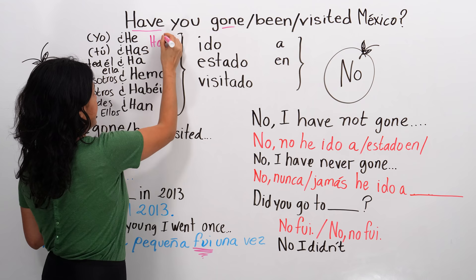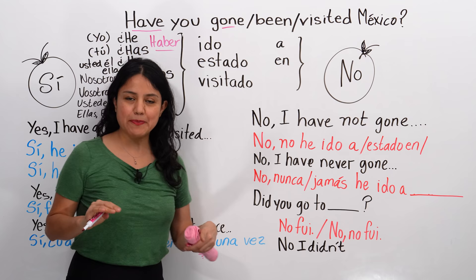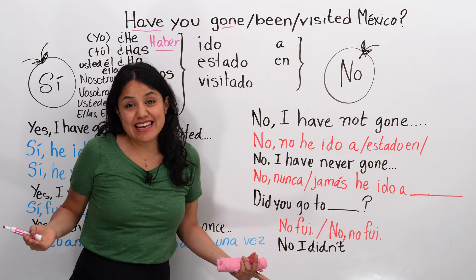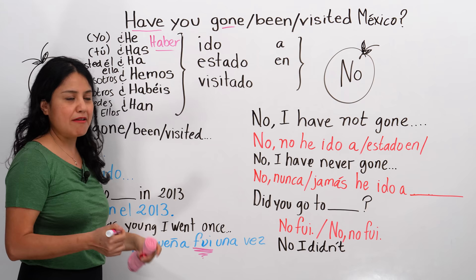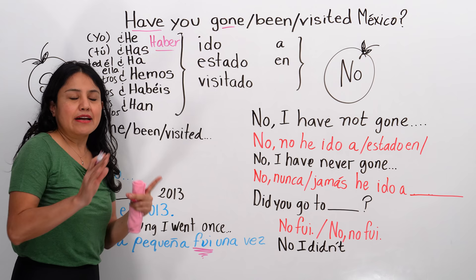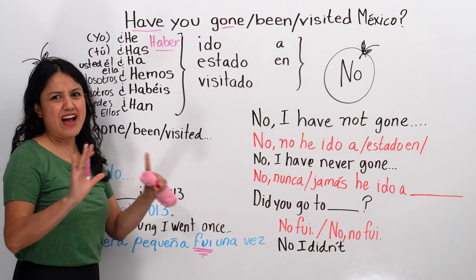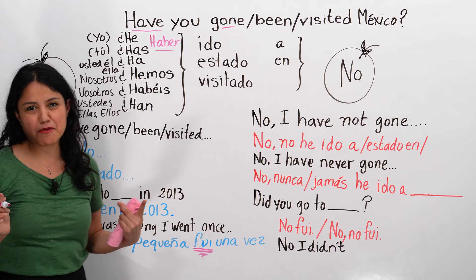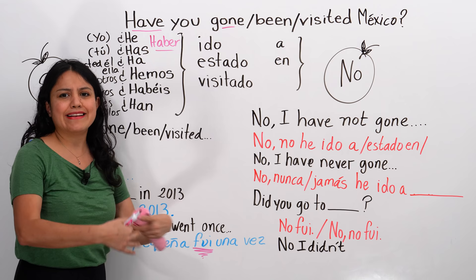Haber is a very interesting verb, and I also have a lesson about it, because es muy importante en español. It's the main auxiliary verb — the main helper — the verb that makes possible more complex tenses. Haber often needs another verb. On its own, haber is a very dry verb; we cannot really do a lot of things with haber alone. It's a team player — haber is a team player.